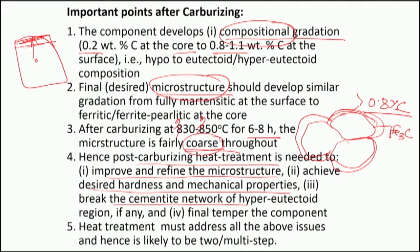In order to break this hyper-eutectoid microstructure or cementite network, we also need a follow-up heat treatment. We also need a final tempering of the component because otherwise the fully hardened microstructure is very hard and brittle. In order to match these difficult demands of having pearlite at the core and martensite at the surface — without very large grain size, not too many stress gradients, but with residual compressive stress on the surface and high hardness — and if we want some post-processing machining, we want to restore certain amount of machinability.